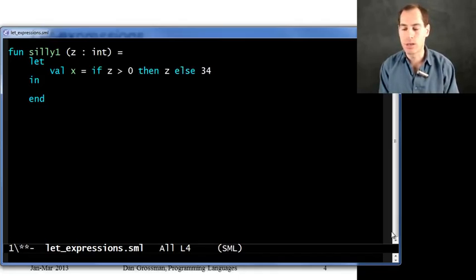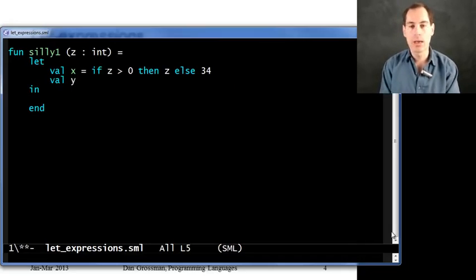When I go to evaluate this expression here, or type check it, I can use all the bindings that are already in the environment. So z, or anything that came earlier in the file would be fine.